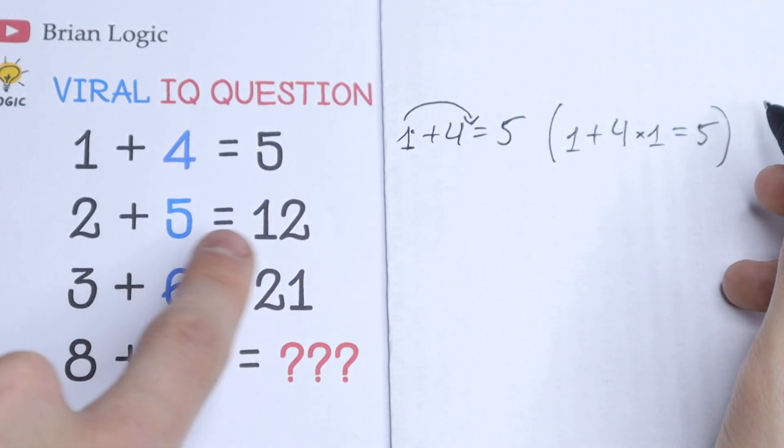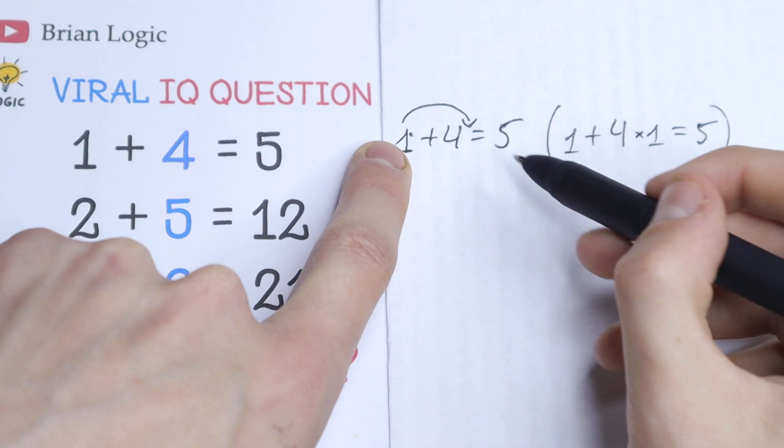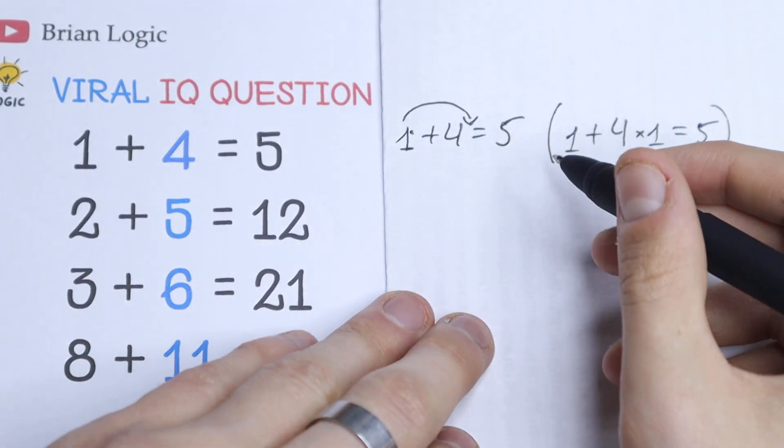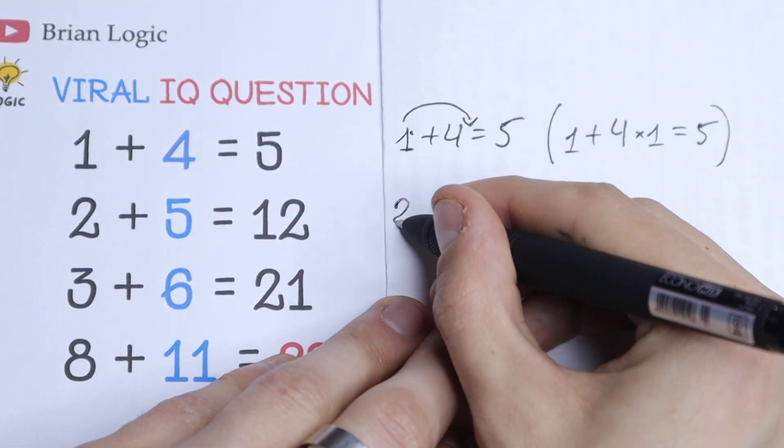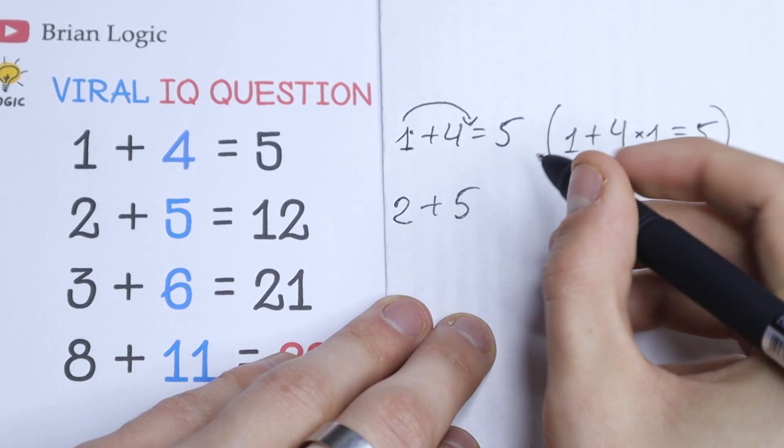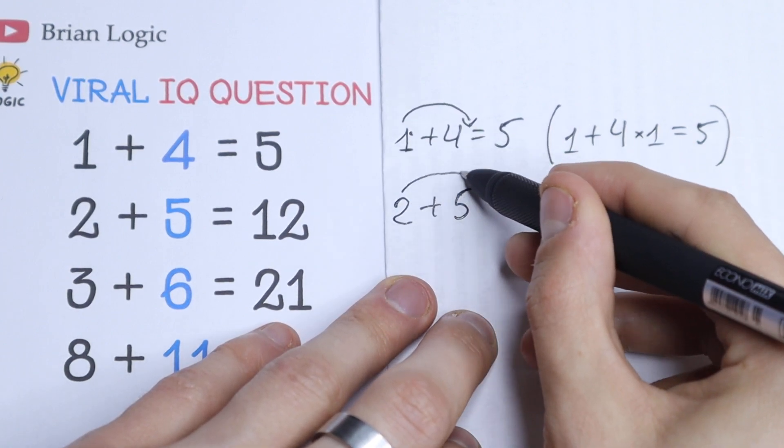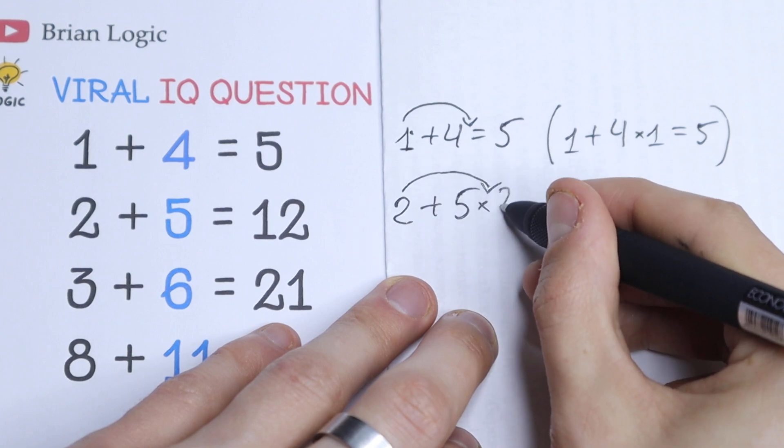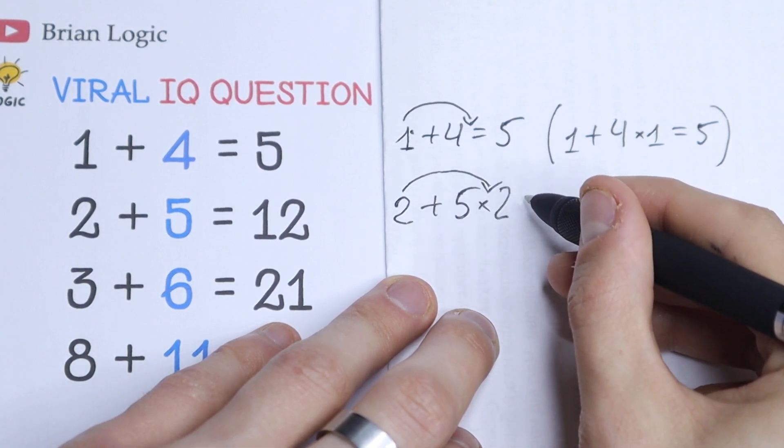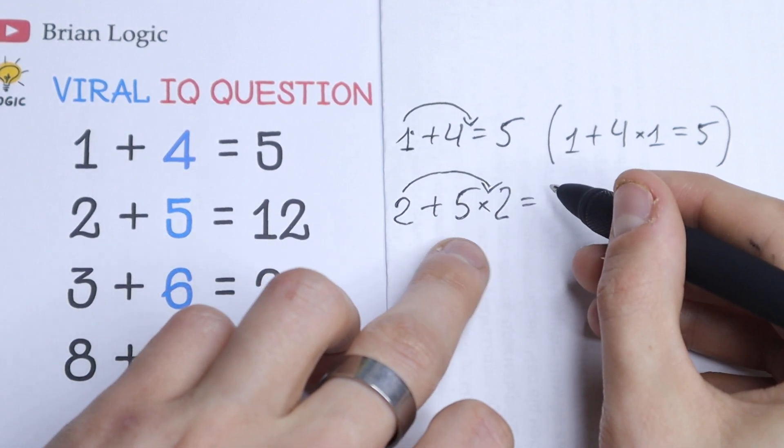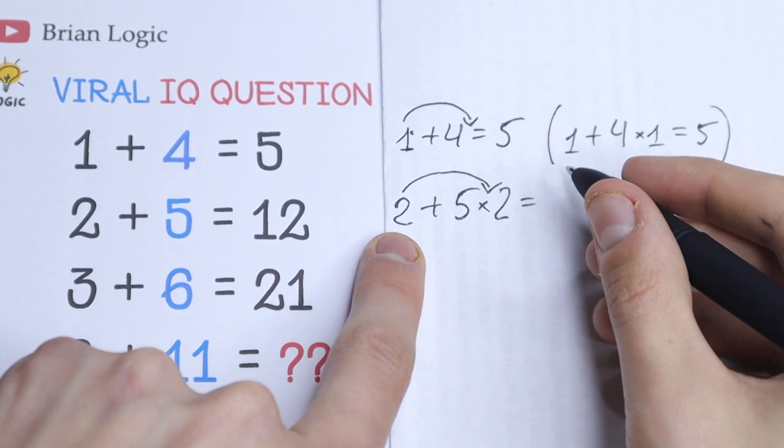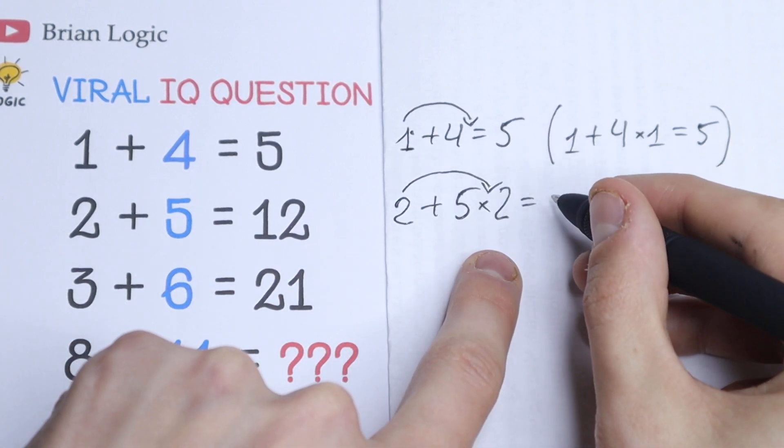So let's use this logic. Let's multiply this first number by this second number. So what we will have? We will have 2 plus 5, and let's bring once more these 2 right here near this 5, multiplying by 2 equal to 10. So right here we have 10 plus 2, it will be 12, which is correct.